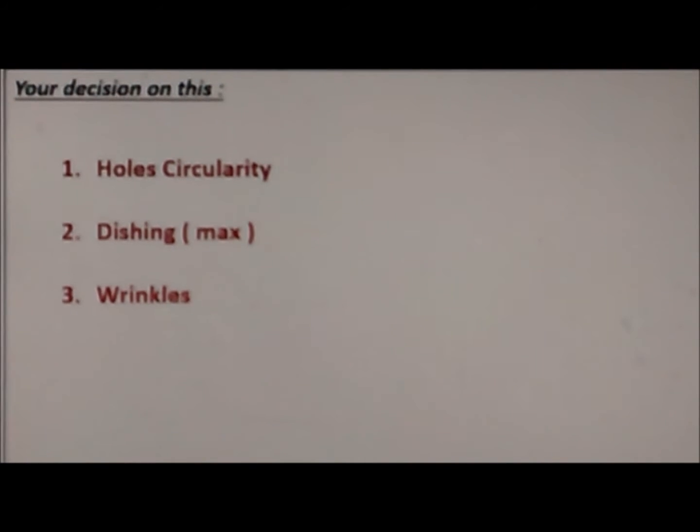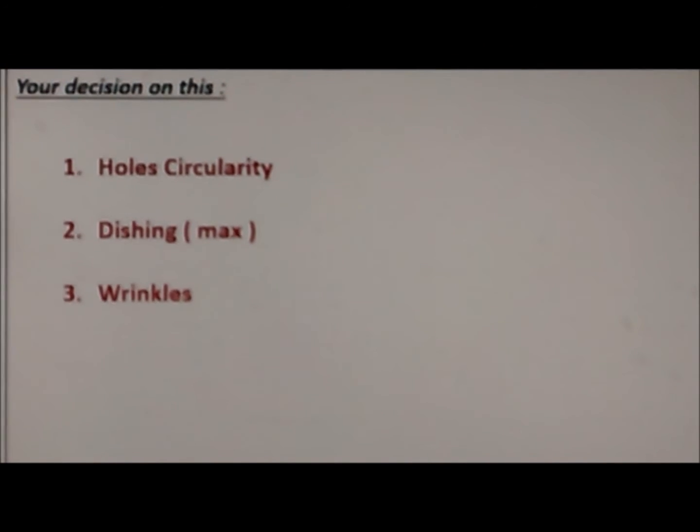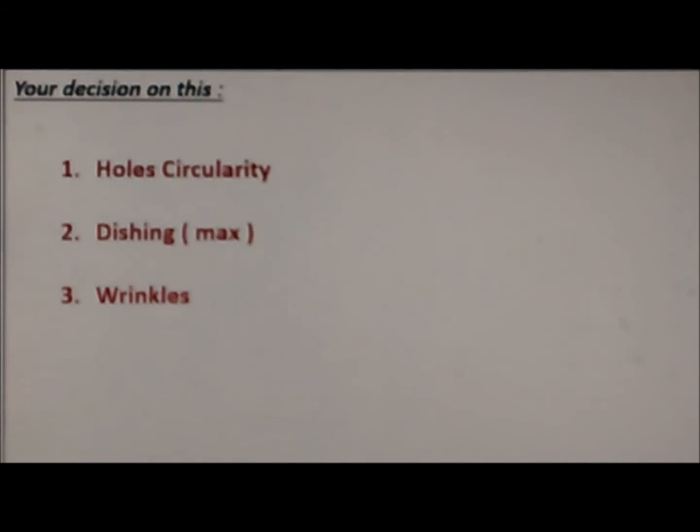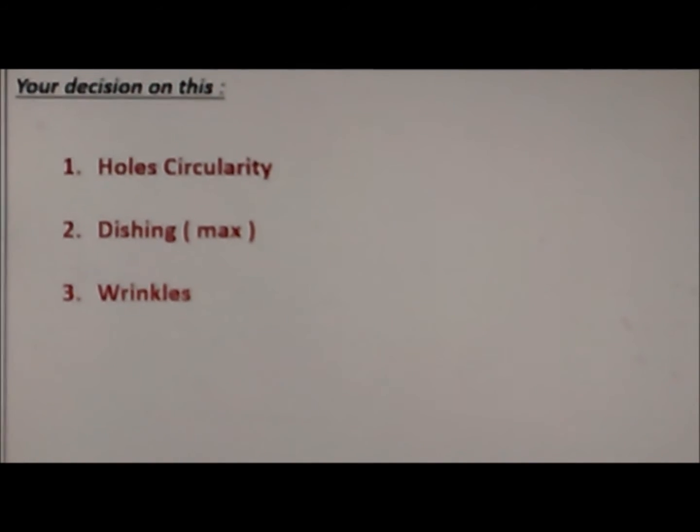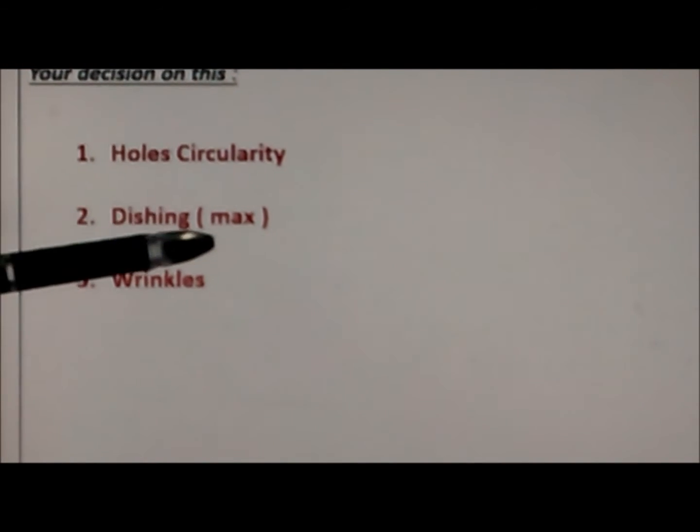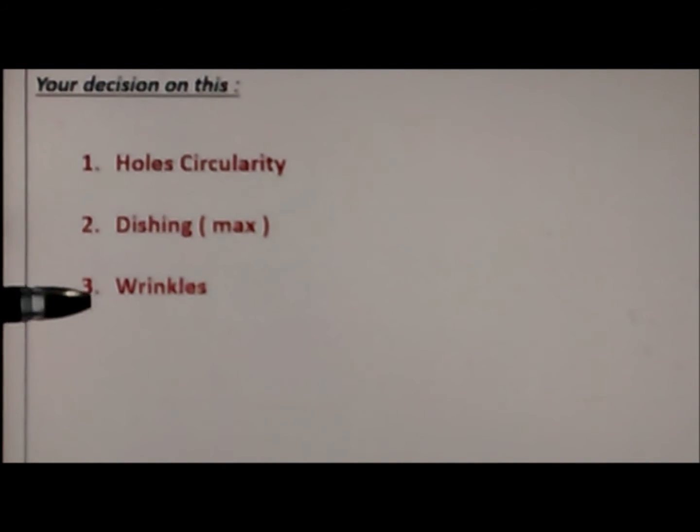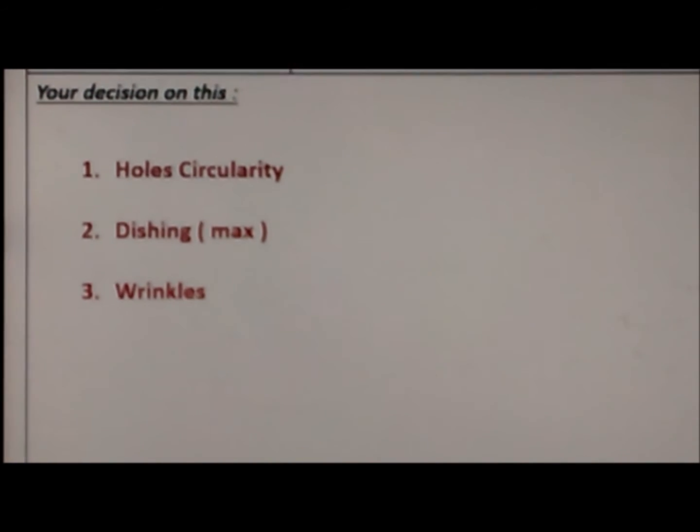The third one is wrinkles. In a sheet metal pressing process, wrinkles is another failure mode. Circularity may go in excess is a failure mode. Dishing may cross the maximum threshold limit is another failure mode. Similarly, more wrinkles is also a failure mode.